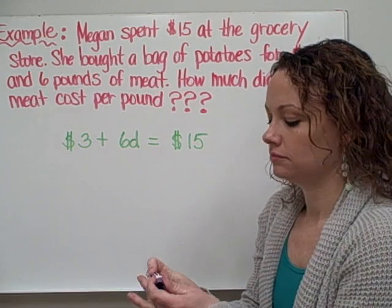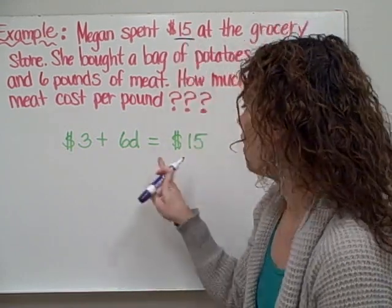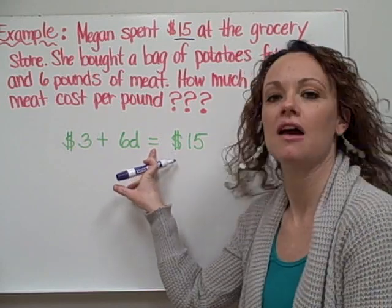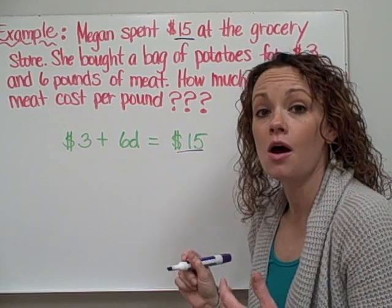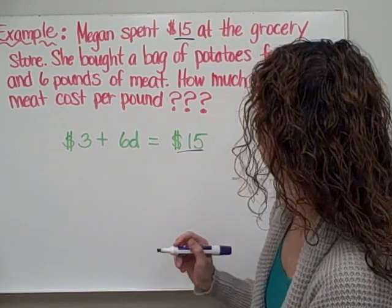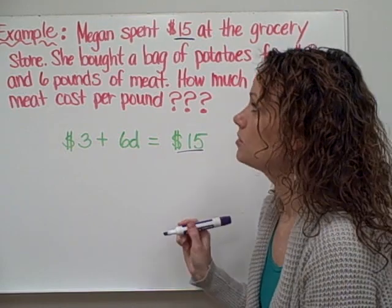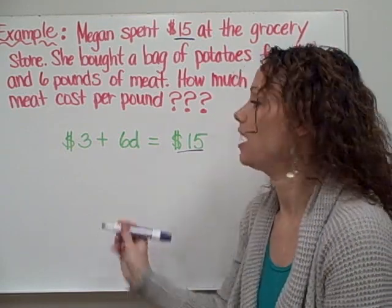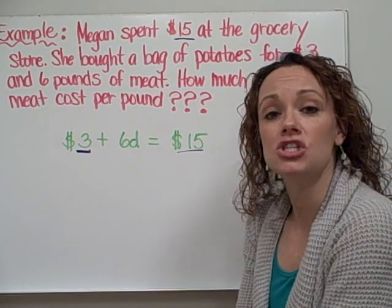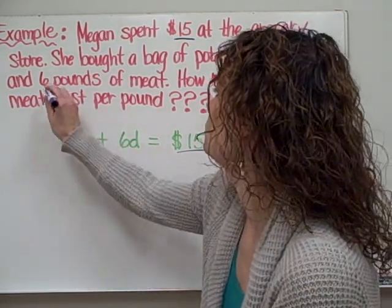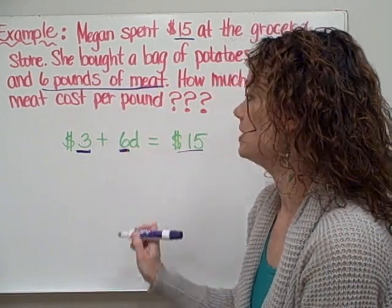What do I know? I know that Megan spent a total of $15 at the grocery store. We often show the total on the other side of the equal sign, so I have my total as $15. I also know she bought a bag of potatoes for $3, so I've represented that amount here. And I know she bought 6 pounds of meat, so I have my 6 represented right here.